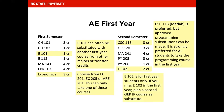E102 is a COE-specific GEP interdisciplinary perspectives course and is now a first semester course. Students who enter the College of Engineering after the first year will take a substitute course in place of E102. The substitute course can be from any of the university-approved GEP interdisciplinary perspectives list.